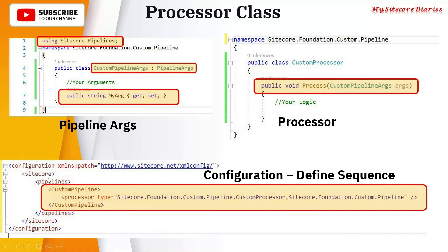This is how you create a new processor class. It will be added into your custom pipeline, and when you look at the show.config you will see one more pipeline, and at the end it will get executed.